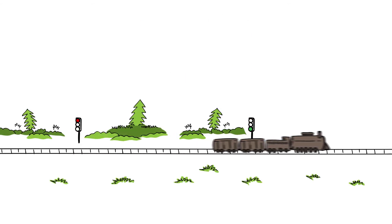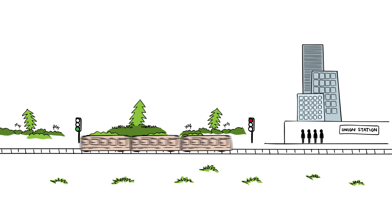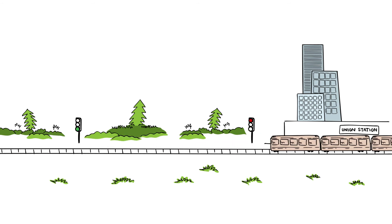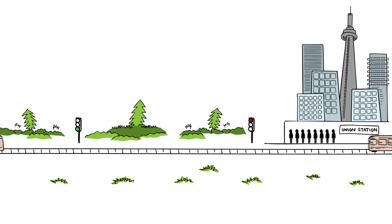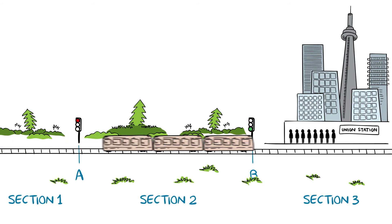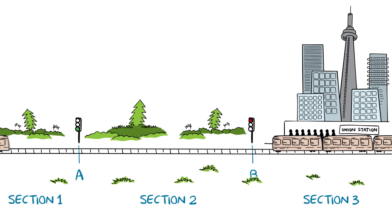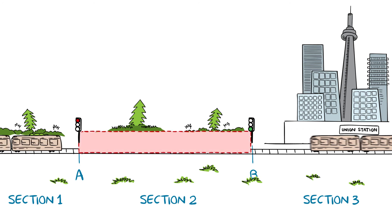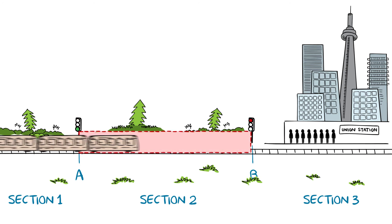The conventional fixed block signalling method has served the industry well, but as populations in major cities grow, transit operators are demanding more from their subways. Unfortunately, conventional fixed block signalling has a natural limit in terms of the number of trains it can push through a subway line, which limits the number of passengers who can ride the subway on a daily basis.